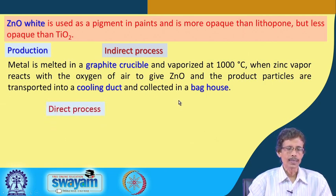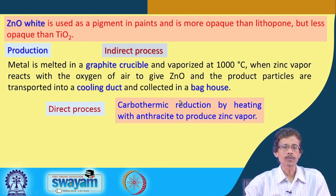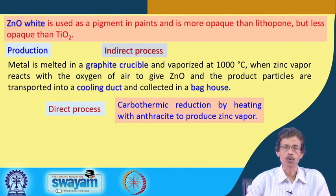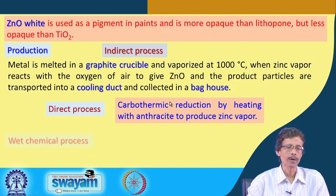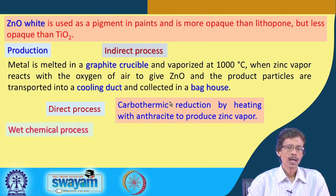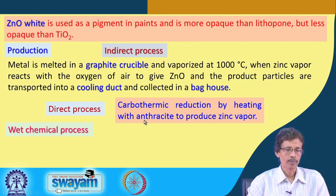In the direct process, we use a carbothermic reduction process. Coal-based anthracite is used to produce zinc vapor through carbothermic reduction, which is the basis of the direct process.